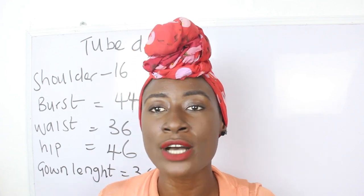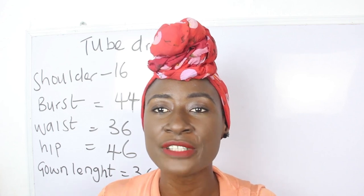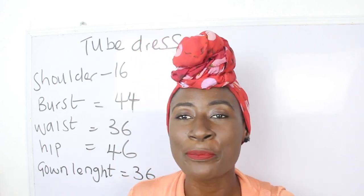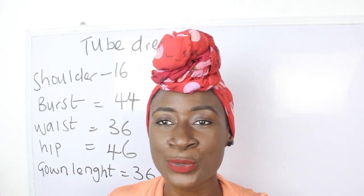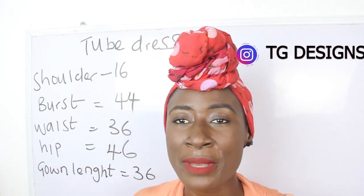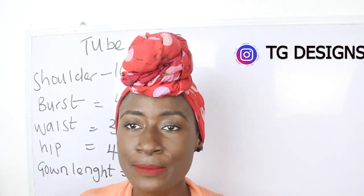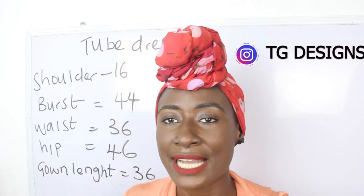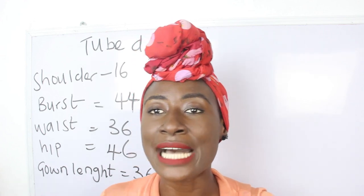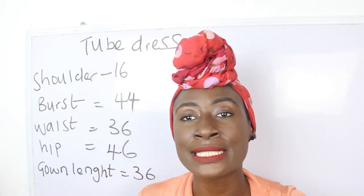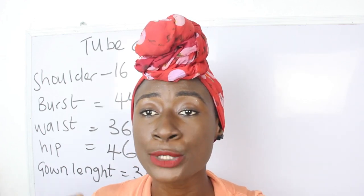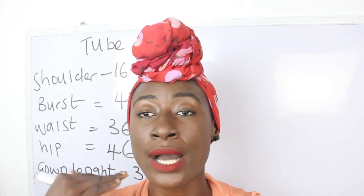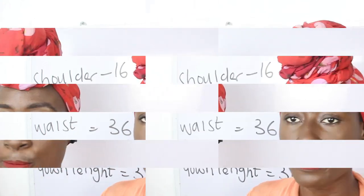We are going to be achieving our tube dress, and our tube dress is going to have a bustier. The basic measurements required are shoulder, bust, waist, hip, and gown length. Note that our gown length is simply from the shoulder to the knee length — that is where we want our tube dress to end.